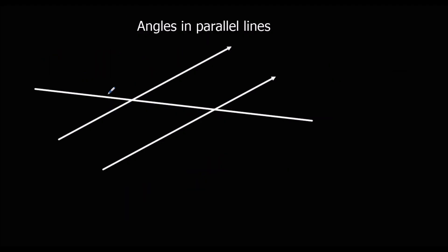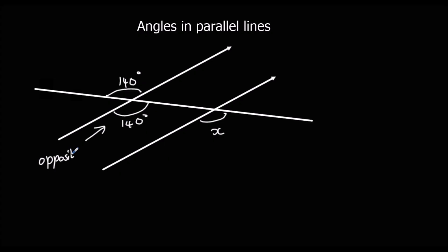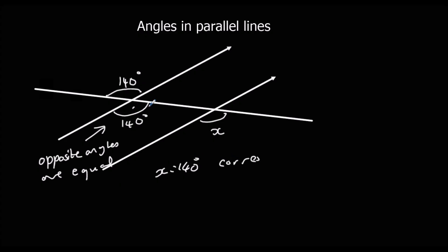Let's look at an example. Say this angle is 140 degrees and we want to find x. There are many different ways to approach this. We could say this one is 140 because opposite angles are equal, and then x is 140 degrees because corresponding angles are equal — these two are the same, they correspond.